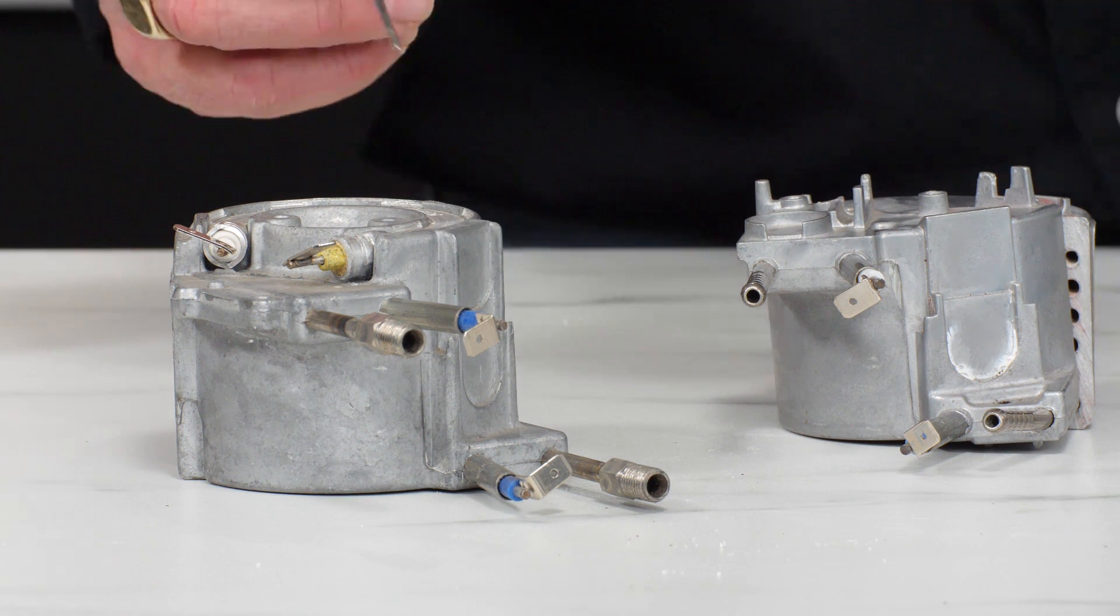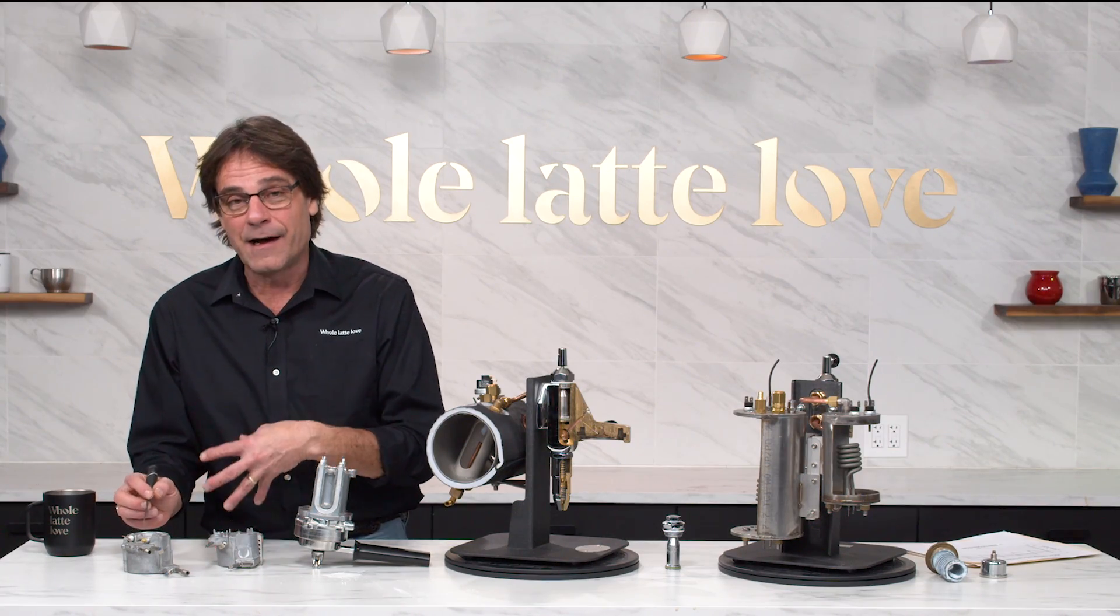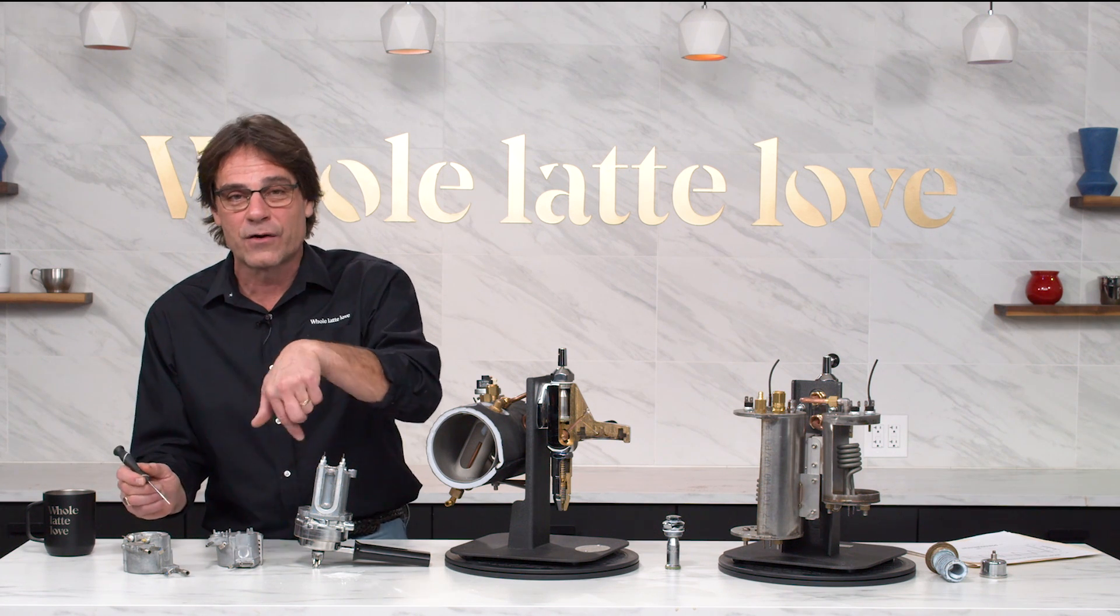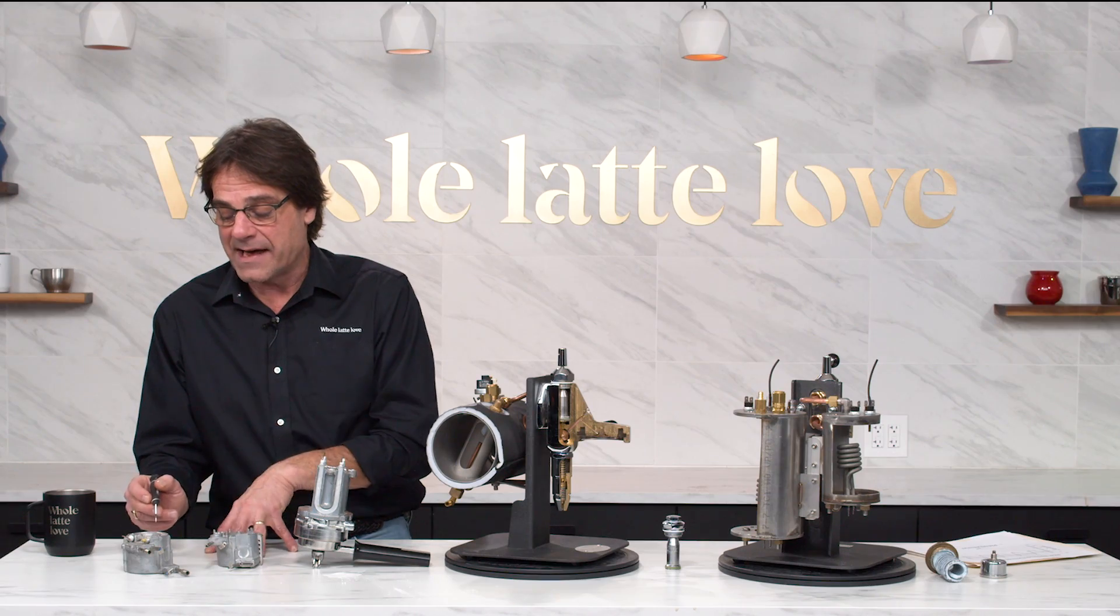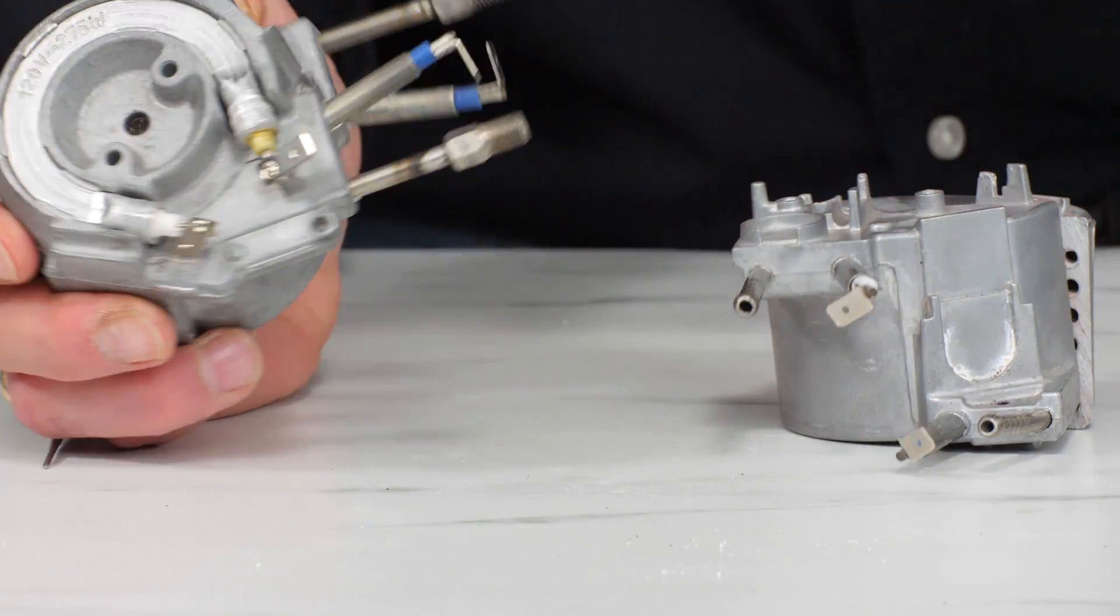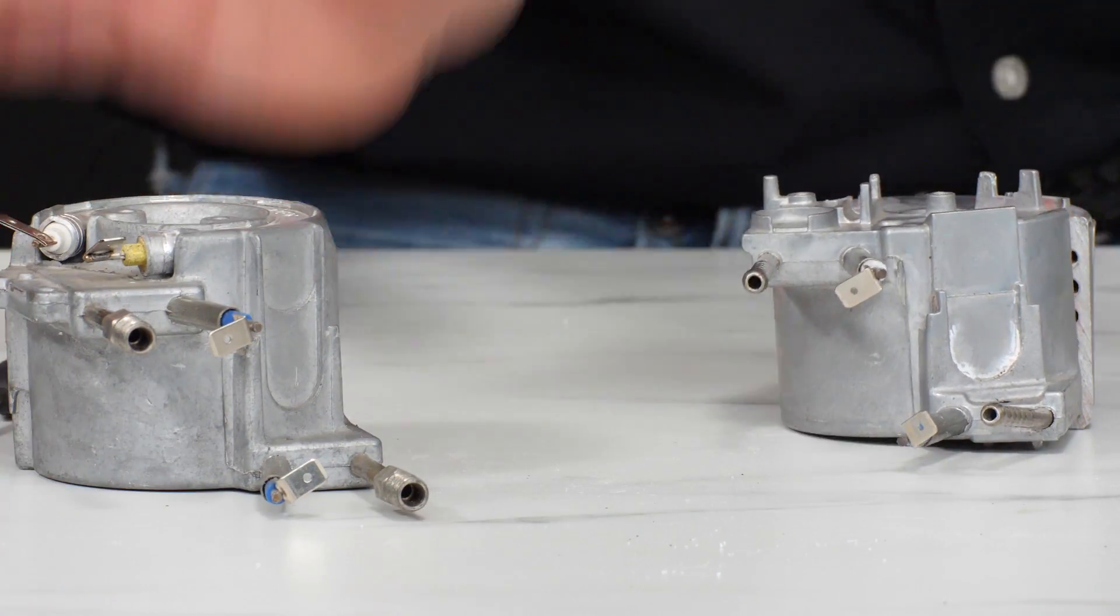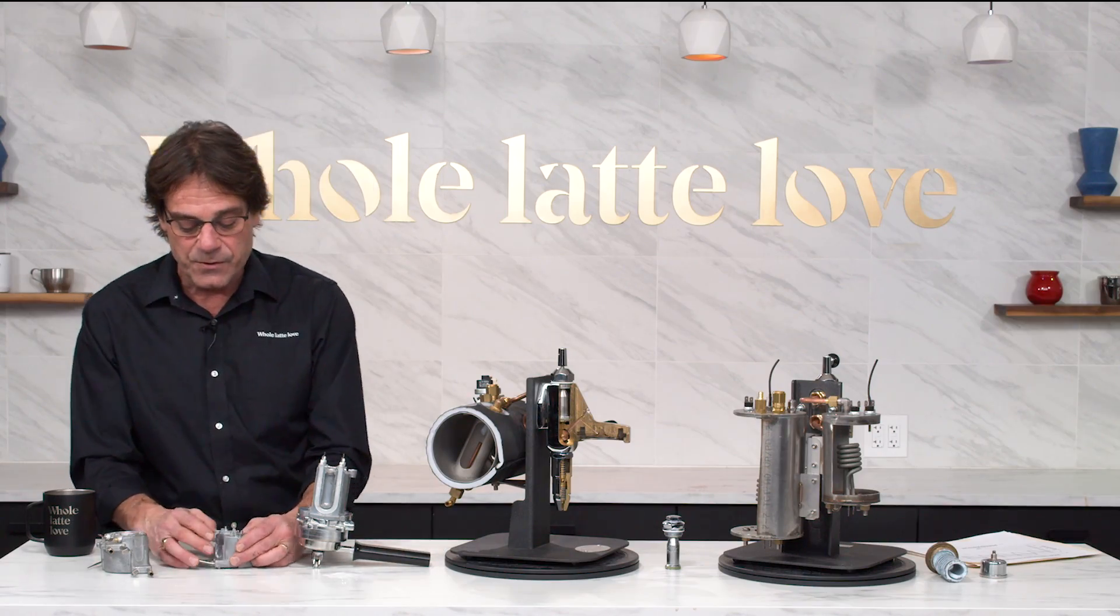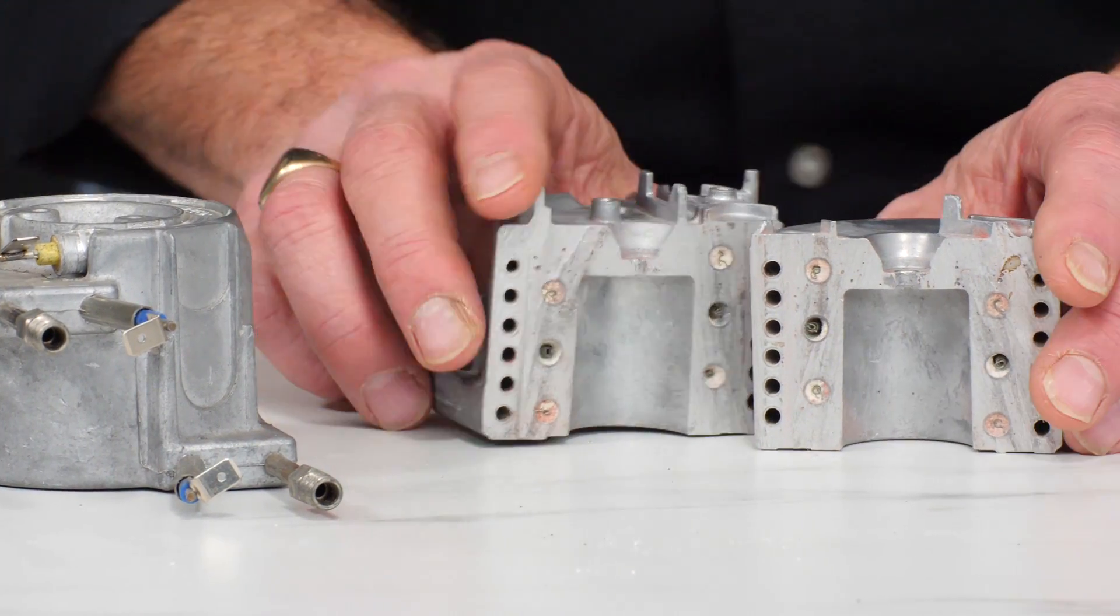They're generally gonna keep the water in the boiler at a certain temperature and then kick on more heat as water goes through the boiler so it's heating water on demand sometimes. This one happens to have two heating elements, one on the outside and one on the inside. We did cut one open here so here's what's going on in there.